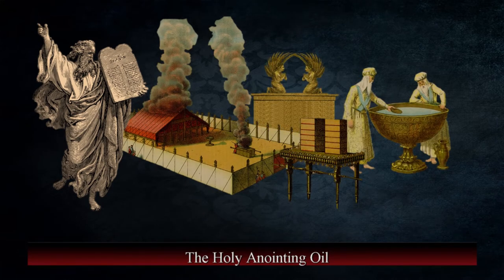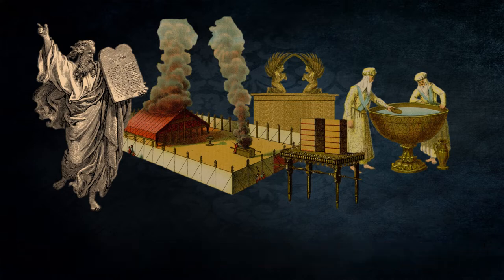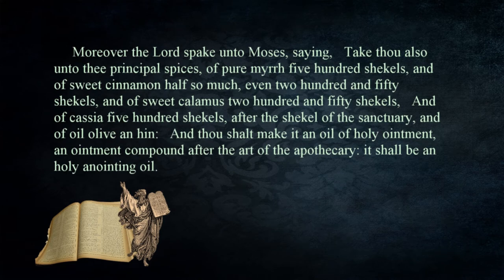As God delivers instructions to Moses concerning the tabernacle and objects to be made, he includes directions for making an oil that will have great significance. The Lord spoke unto Moses saying: "Take thou also unto thee principal spices of pure myrrh, five hundred shekels; and of sweet cinnamon, half so much, even two hundred and fifty shekels; and of sweet calamus, two hundred and fifty shekels; and of cassia, five hundred shekels after the shekel of the sanctuary; and of oil olive, a hin. And thou shalt make it a holy anointing oil, an ointment compound after the art of the apothecary." — Exodus 30:22–25.